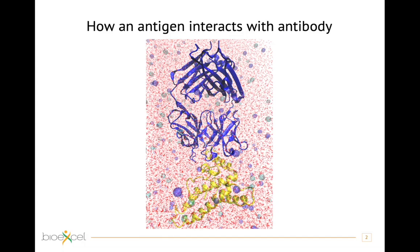We also want to understand better how molecules interact with each other — how an antigen and antibody interact, how the surface model when one comes close to the other. Simulation can also be used to refine a structure coming from experimental techniques, or to complement a structural biology experiment, and it can also be useful to refine models coming from docking or homology modeling experiments.